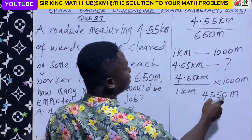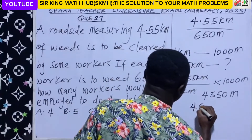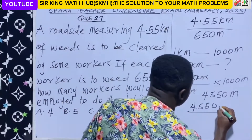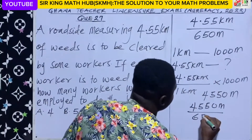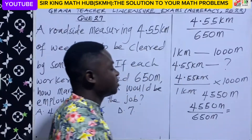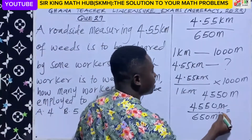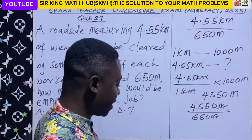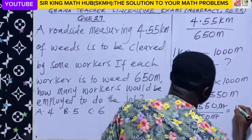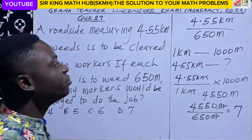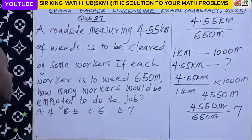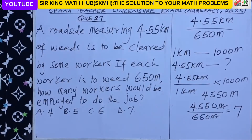In place of 4.55 kilometers, I substitute 4550 meters, divided by 650 meters. The meters cancel out, and using a calculator, 4550 divided by 650 gives us 7. In conclusion, 7 workers would be employed to do the job.